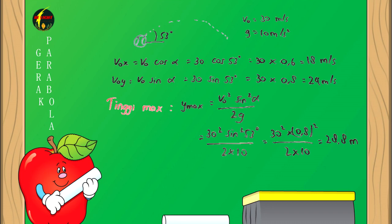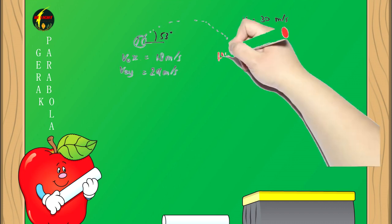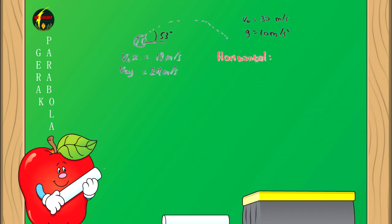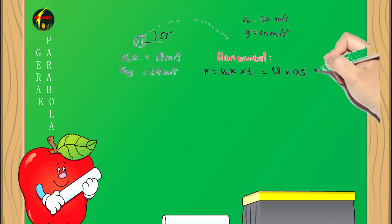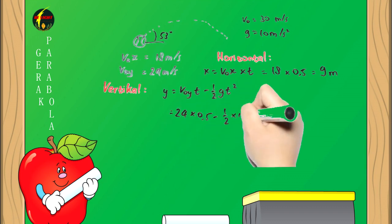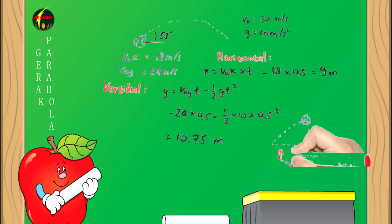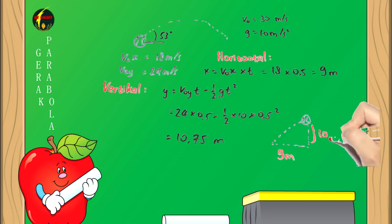Untuk bagian C: Pada sisi horizontal, X = V0X × T = 18 × 0,5 = 9 meter. Untuk sisi vertikal, Y = V0Y × T - ½gT² = 24 × 0,5 - ½ × 10 × 0,5² = 10,75 meter. Sehingga didapat posisi X = 9 meter dan Y = 10,75 meter.